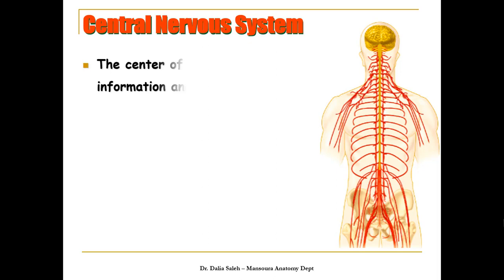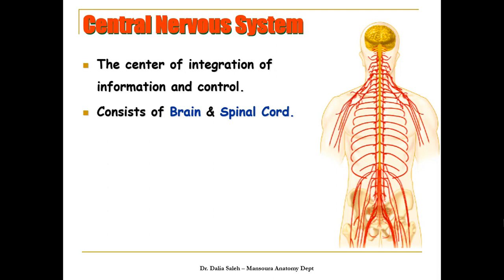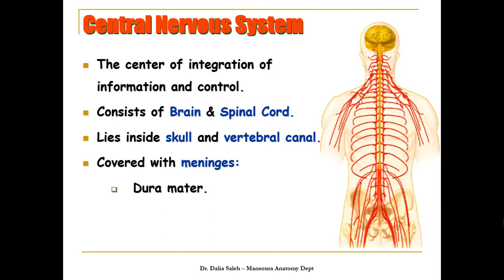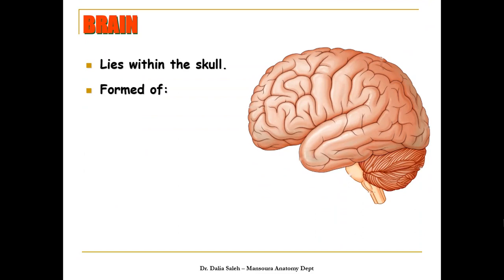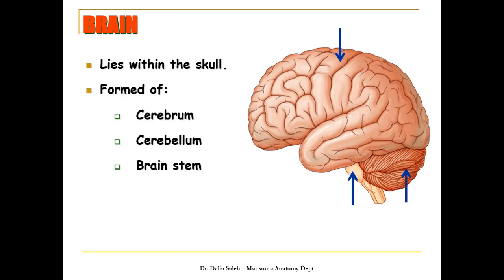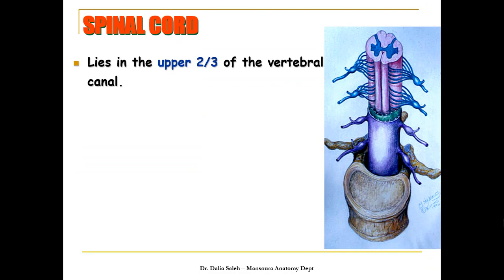The central nervous system is the center of integration of information and control. It consists of the brain and the spinal cord, which lie inside the skull and the vertebral canal and are covered with meninges. The dura mater is the outer layer, the arachnoid mater is the middle layer, and the pia mater is the innermost layer. The brain lies within the skull and is formed of the cerebrum, the cerebellum, and the brain stem, which is formed of the midbrain, pons, and medulla.